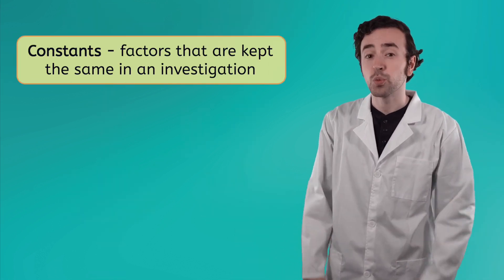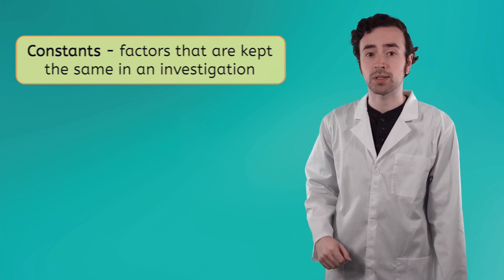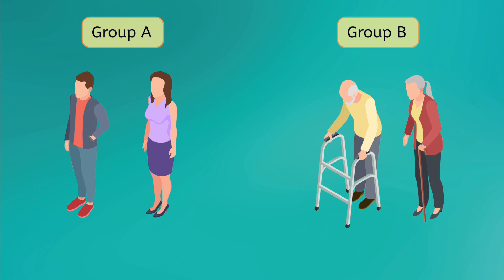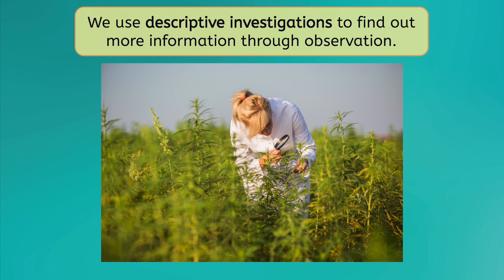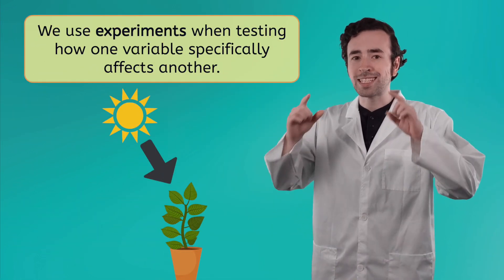Now, we're ready to talk about constants, which are factors that are kept the same throughout the entire investigation. This ensures that only the independent variable is affecting our results. So, in our medicine experiment, some examples of things we want to keep constant are the general age and health of the subjects. If one group was significantly younger and healthier than another, it would be hard to say if any differences in recovery time were caused by the medicine or by these other factors. As you can see, creating a fair test about how one thing affects another is tricky, which is why experiments have more rules than descriptive and comparative investigations.